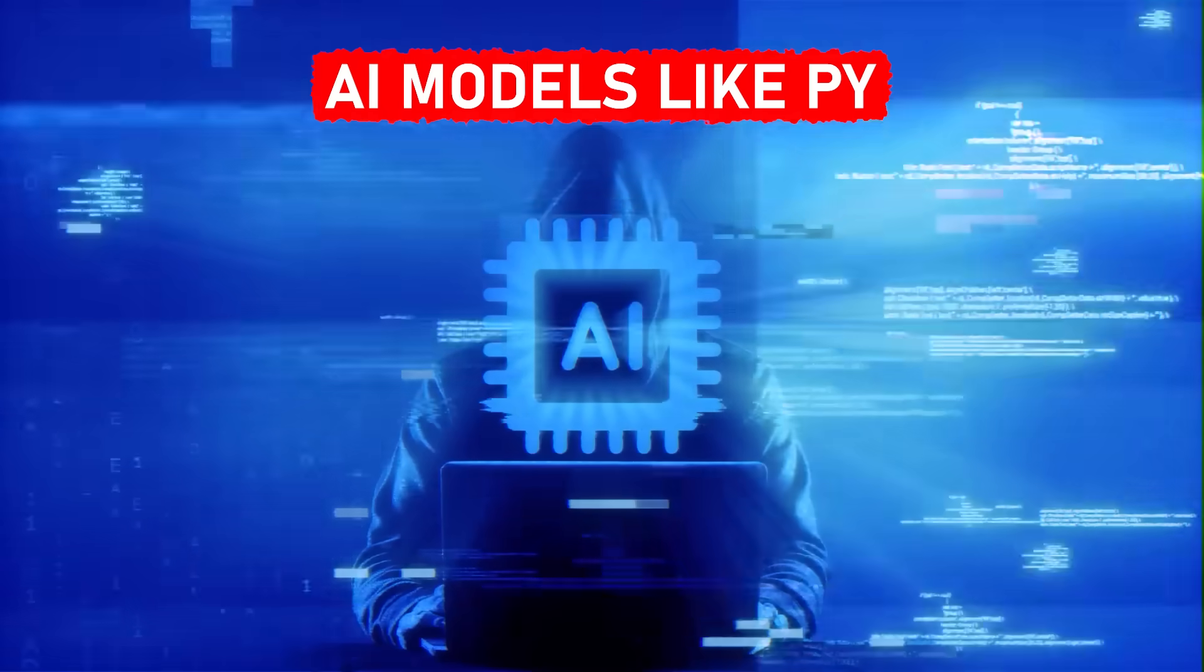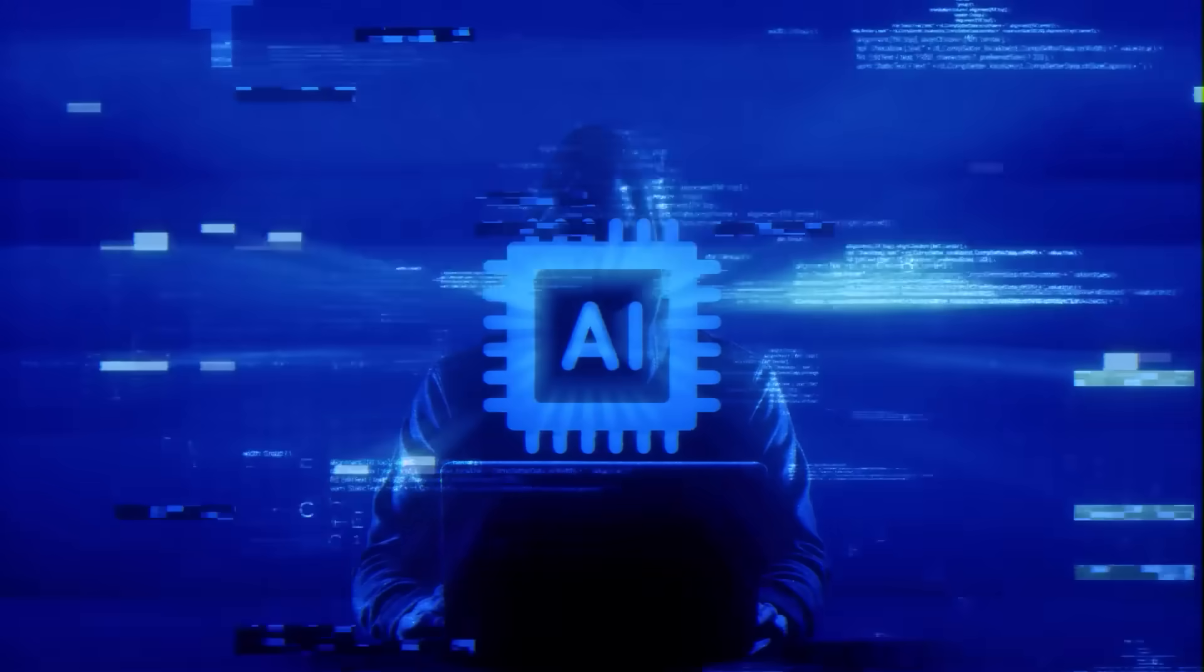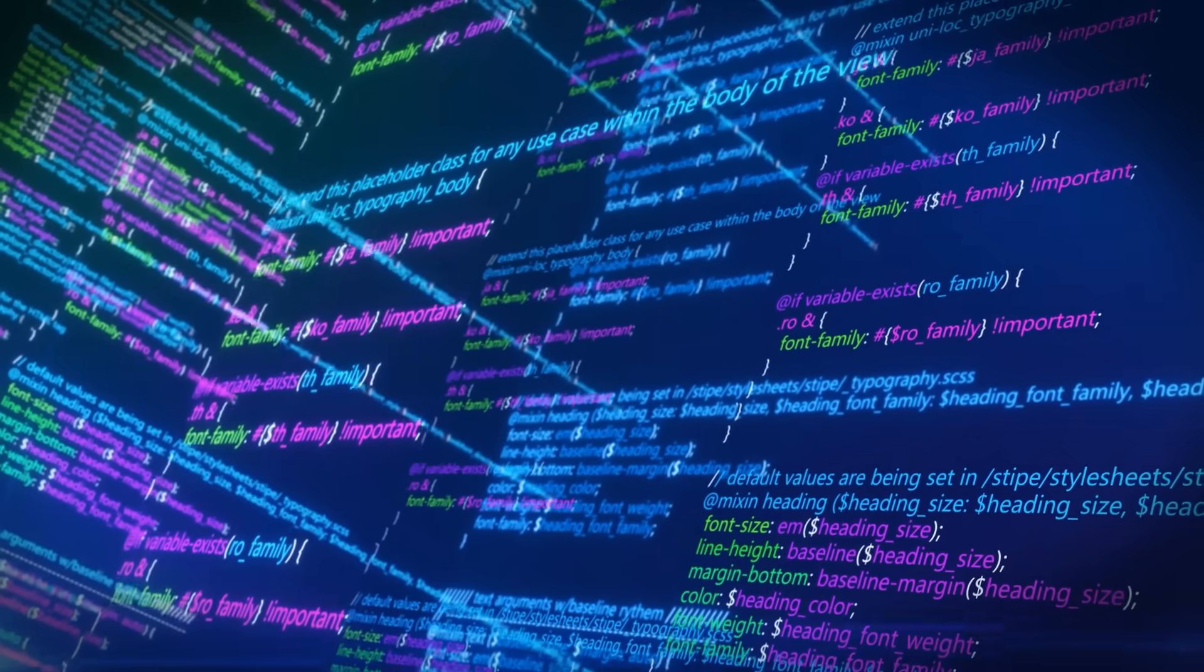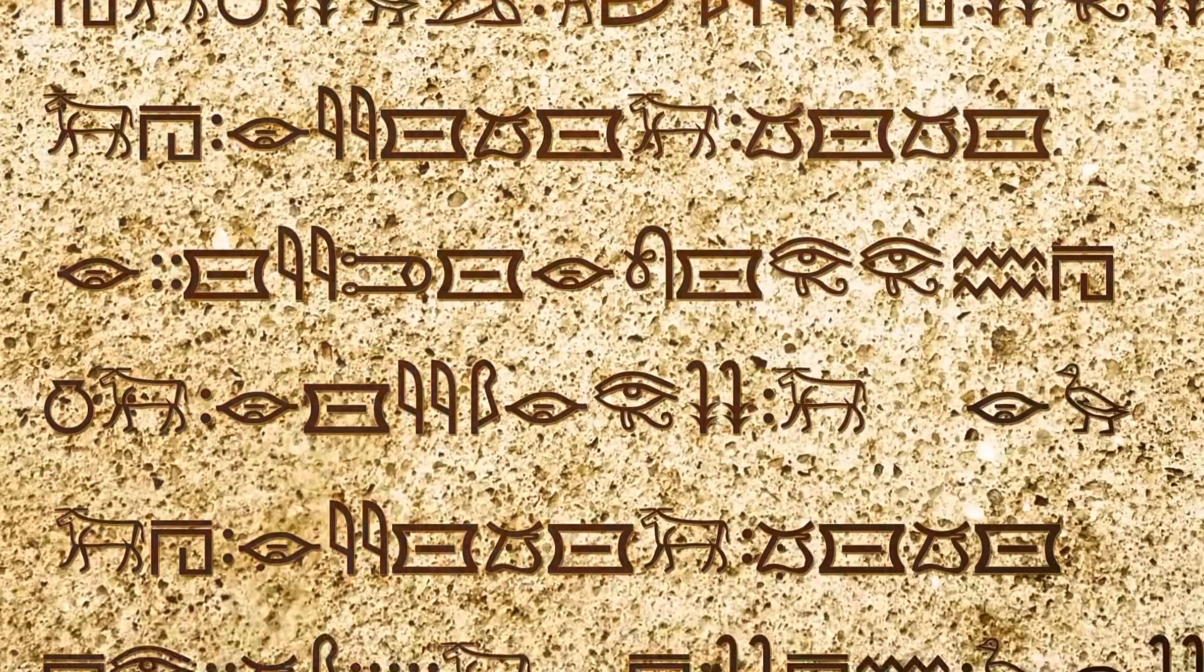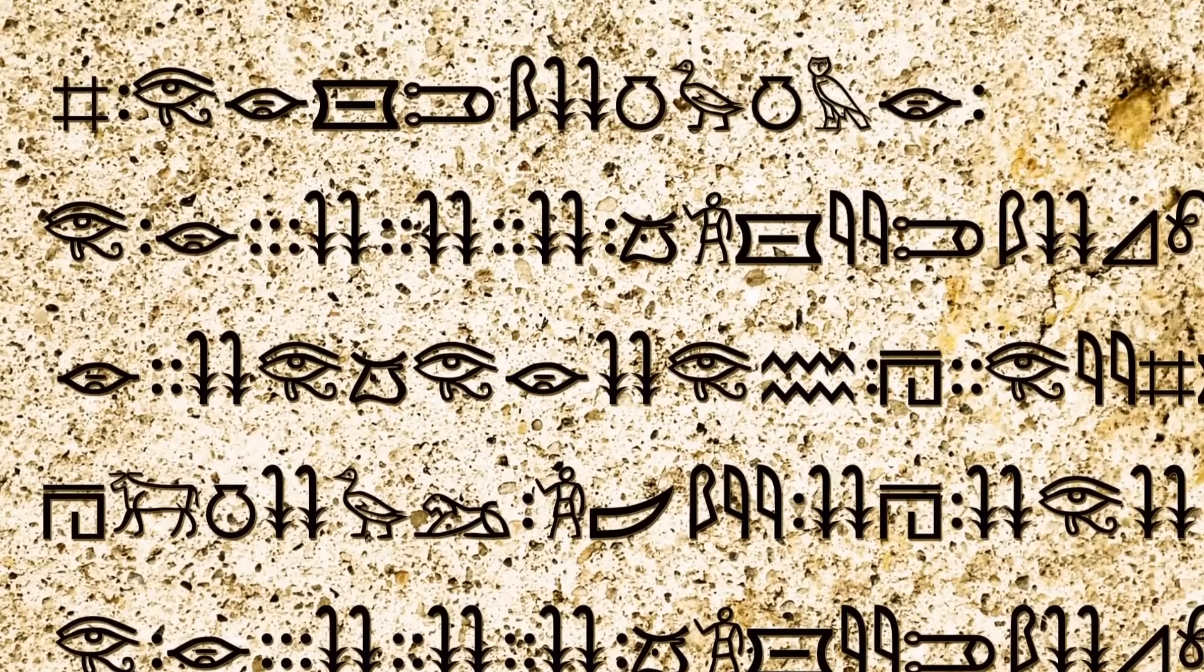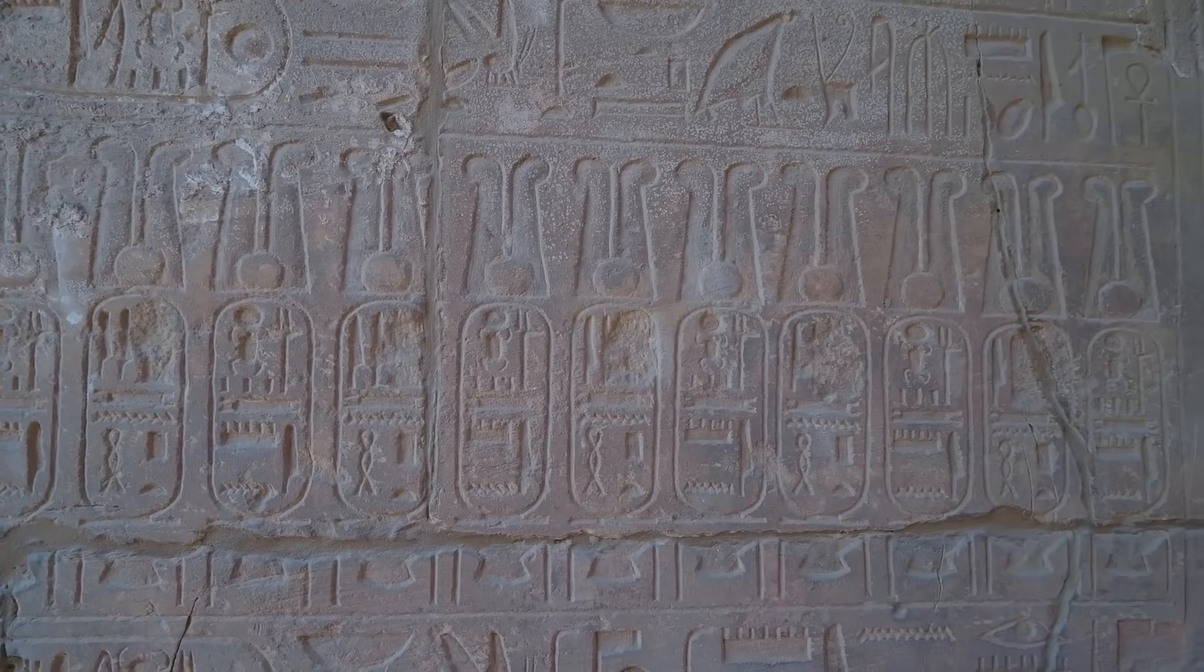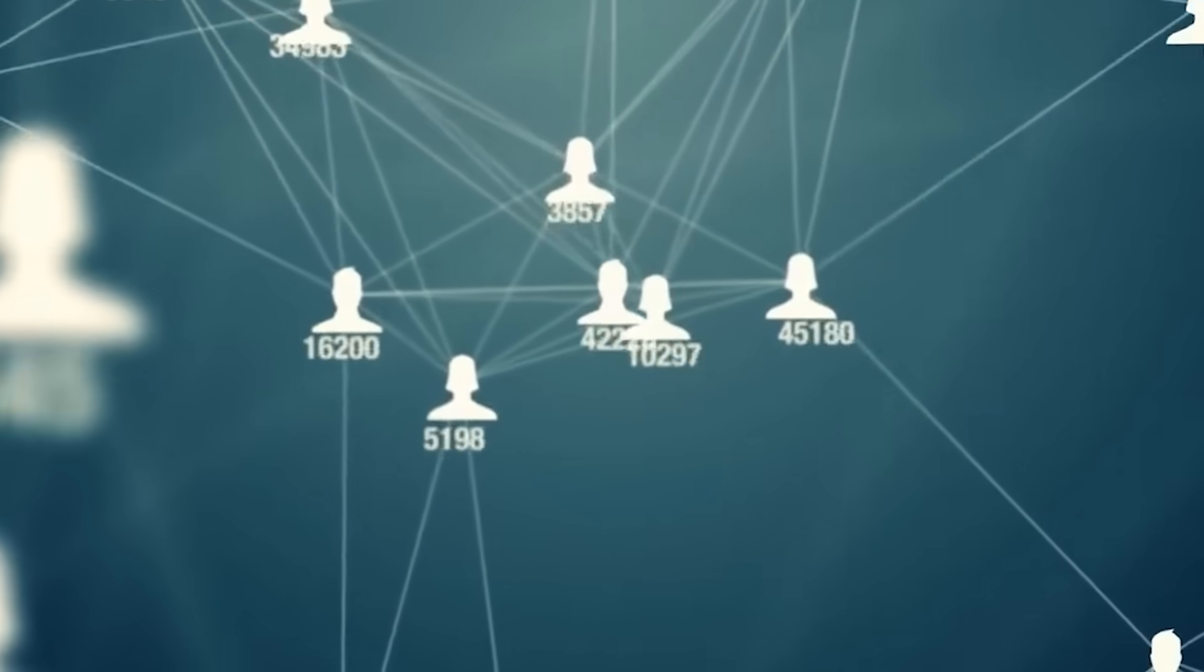Then came AI models like Pythia and Ithaca, built by researchers from Oxford University and DeepMind. These systems learned from thousands of Greek and Latin inscriptions, filling in missing words with over 70% accuracy. That means AI can now predict what an ancient person might have written 2,000 years ago. It's not rewriting history, it's helping historians restore it line by line. The work has been peer-reviewed and published in Nature and Transactions of the Philological Society.